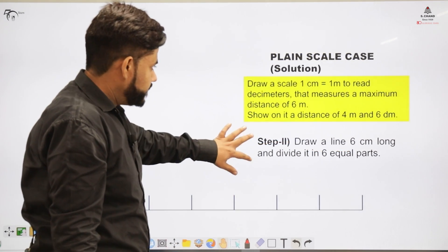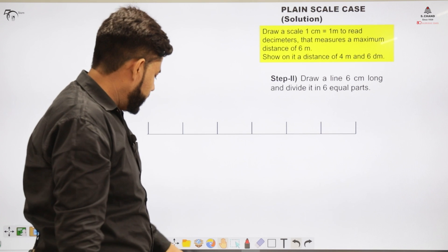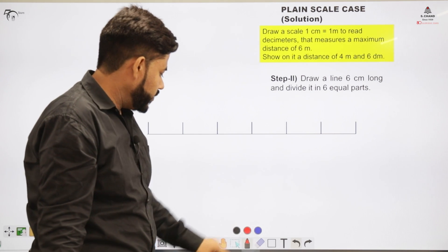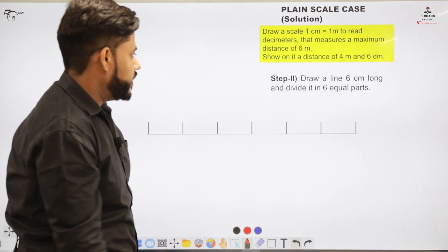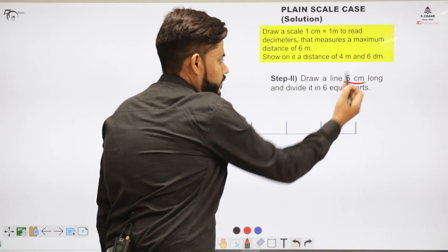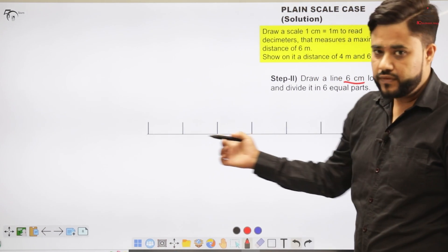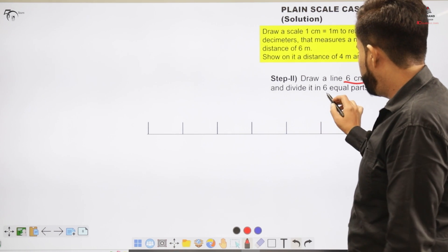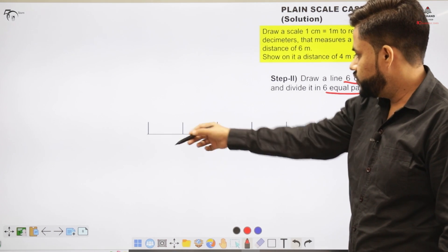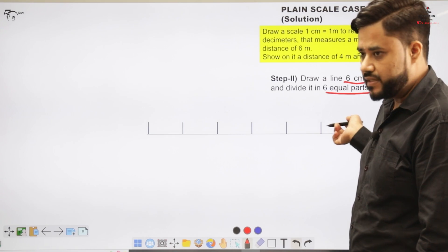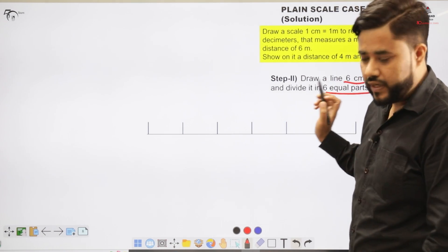Now what next, how to draw the scale? The maximum distance that we want to represent here is 6 centimeter. So we will be drawing a line of 6 centimeter. Here you can see that I have drawn a line of 6 centimeter and I would be dividing that into 6 equal parts. So 1, 2, 3, 4, 5 and 6. 6 equal parts I have divided the line.